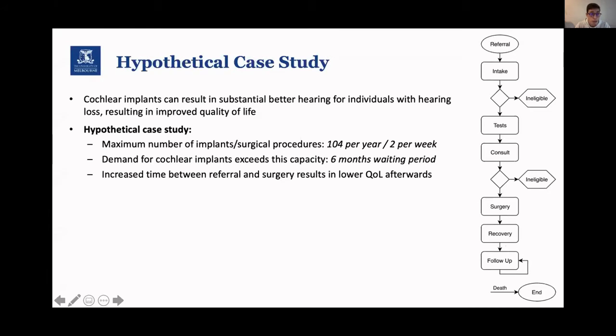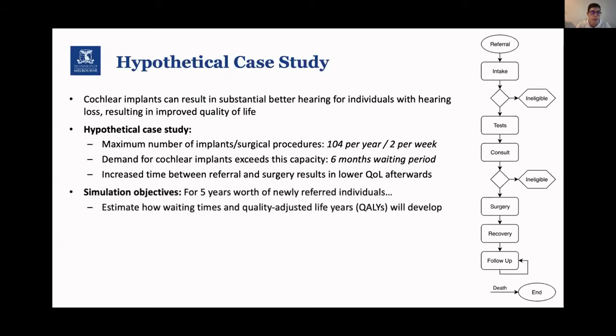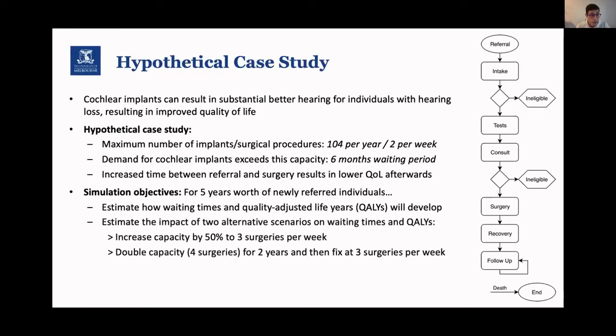The longer the waiting time between referral and surgery, the lower the quality of life afterwards. The objective of our simulation is that we want to simulate, for five years' worth of newly referred individuals, how the waiting time will develop and what the impact on the quality of life would be. We also want to see whether some alternatives might actually improve things. We will consider two scenarios, one in which the capacity is increased to three surgeries per week, 50%, and the other strategy is a bit more dynamic, where we temporarily increase or double the surgery capacity, after which we fix it at three surgeries per week.